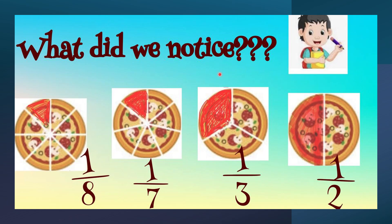What did we notice? We have one eighth, one seventh, one third, and one half — all the numerators are the same. If I divide my pizza into eight slices, one slice is very small. Into seven slices, one slice is a bit bigger. Into three parts, one slice is quite bigger. And if I made only two slices, one out of two is the biggest of all.